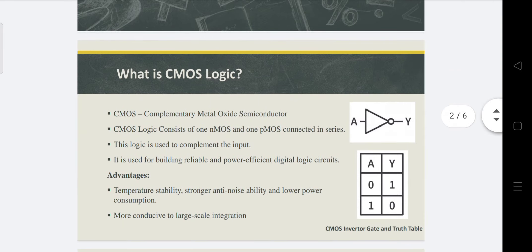CMOS is expanded as Complementary Metal Oxide Semiconductor. This metal oxide semiconductor structure gives the complementary output of the given input. Usually the CMOS logic consists of one NMOS and one PMOS connected in series. The NMOS is placed at the bottom of the construction and the PMOS is placed at the top of the CMOS logic diagram.